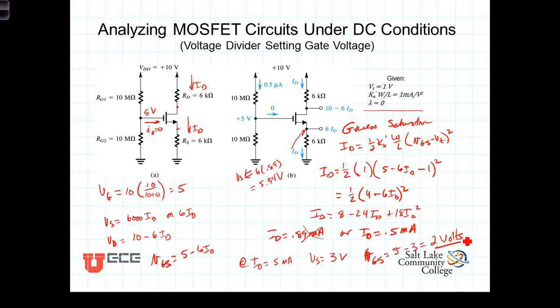Now let's go ahead and calculate V_DS. V_D rather, let's call V_D would be 10 minus 6 times the 0.5 or 10 minus 3. V_D would be 7 volts and V_DS then would be 7 minus the V_S which was 3, so 7 minus 3 equals 4 volts.